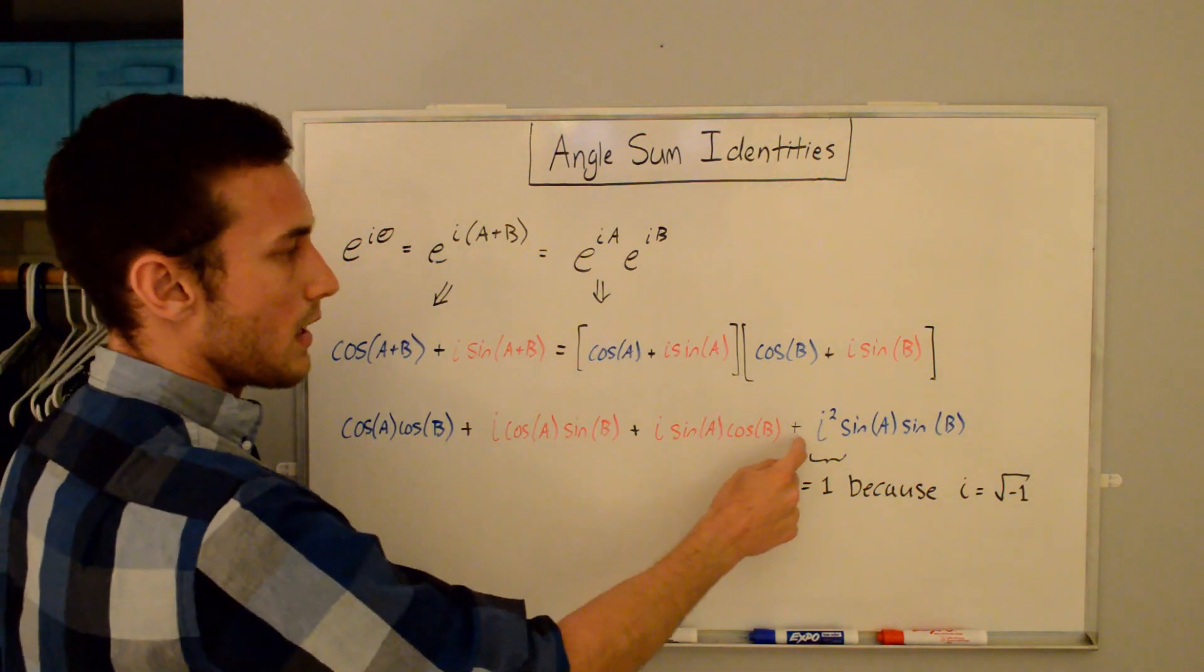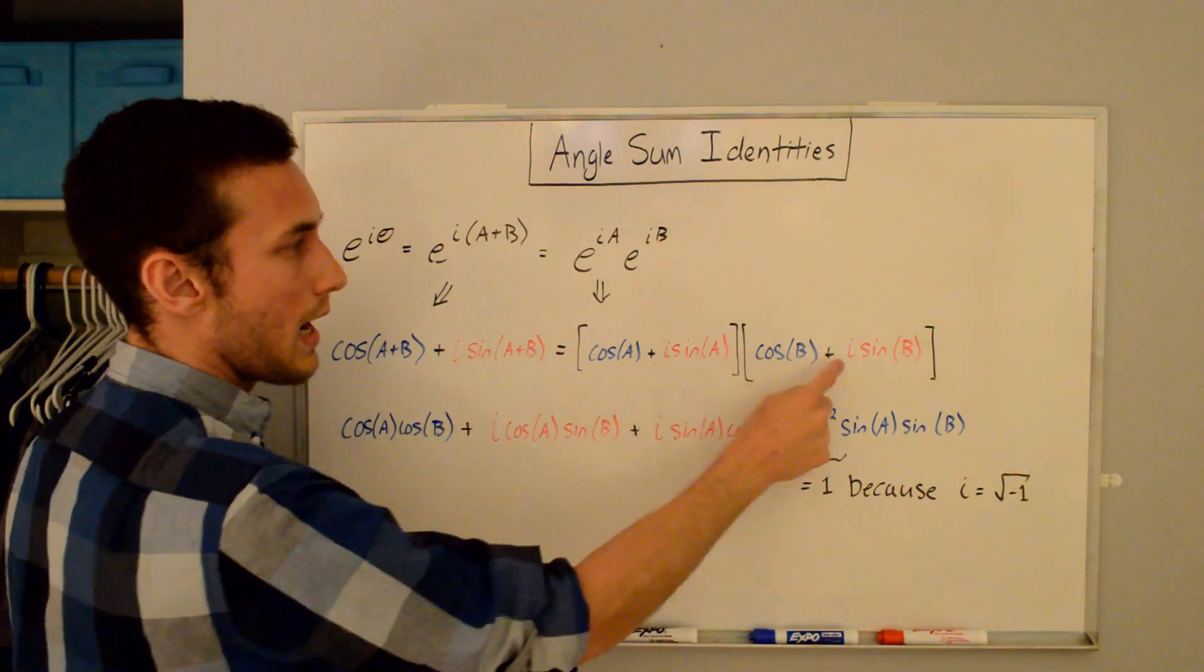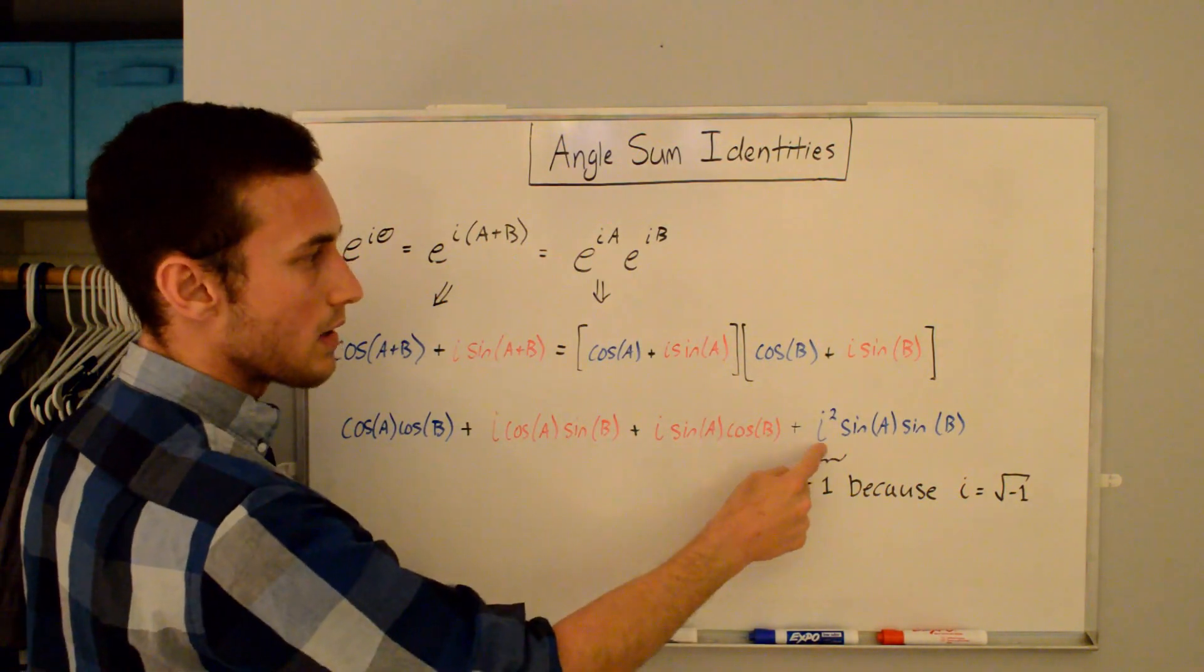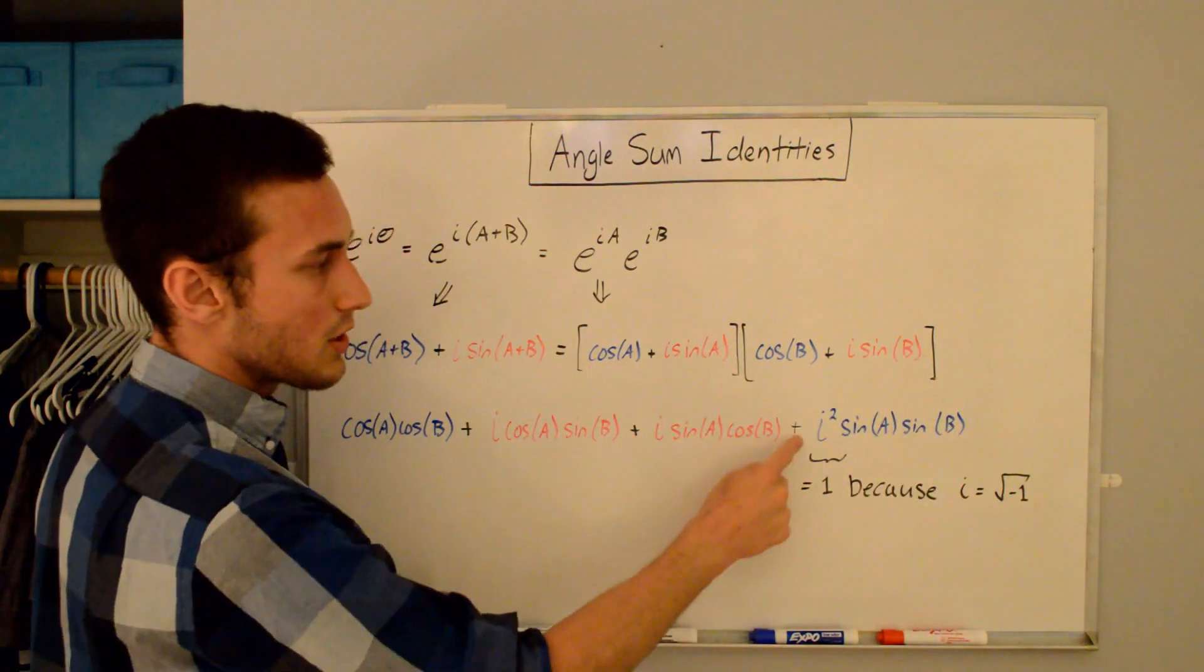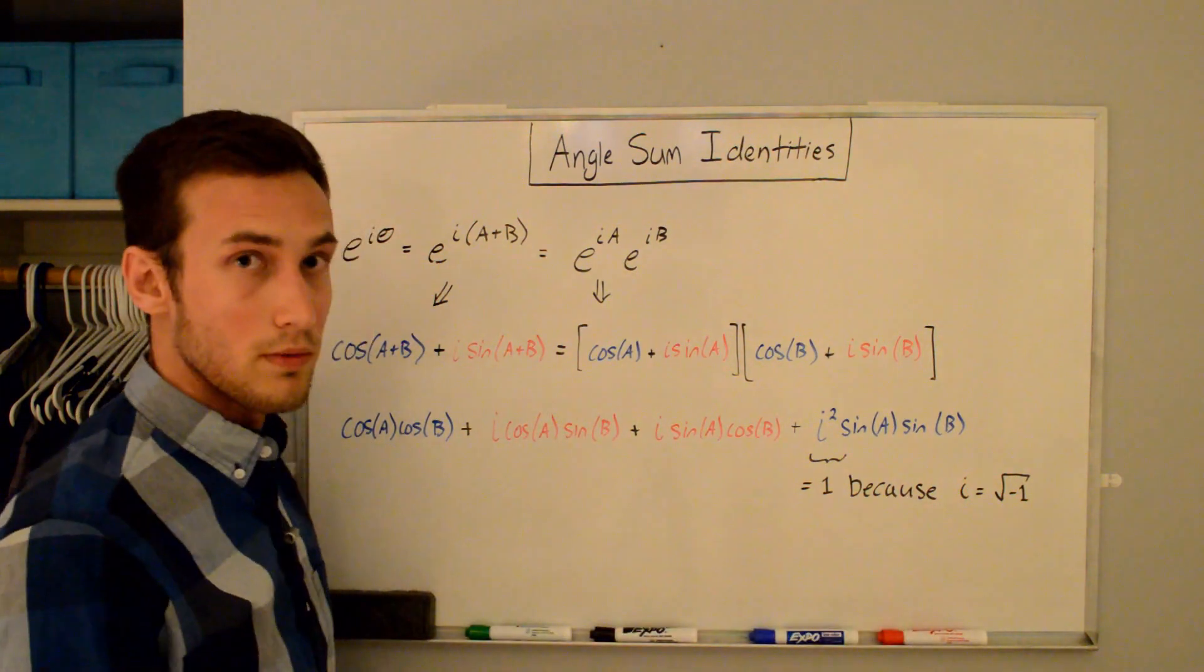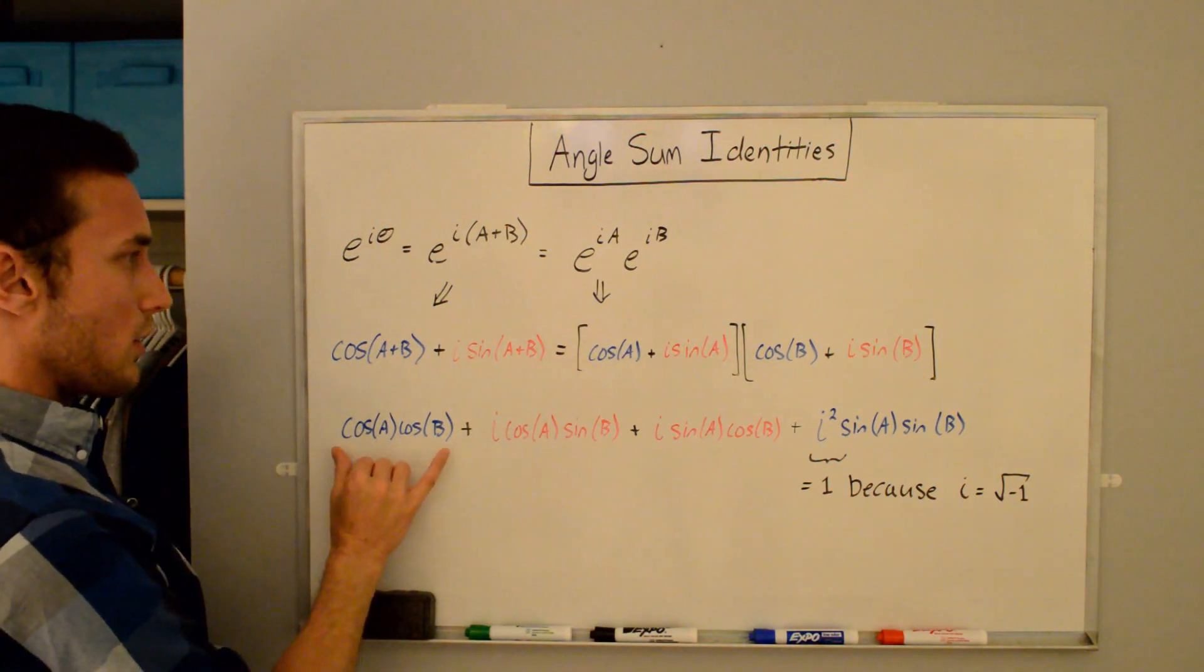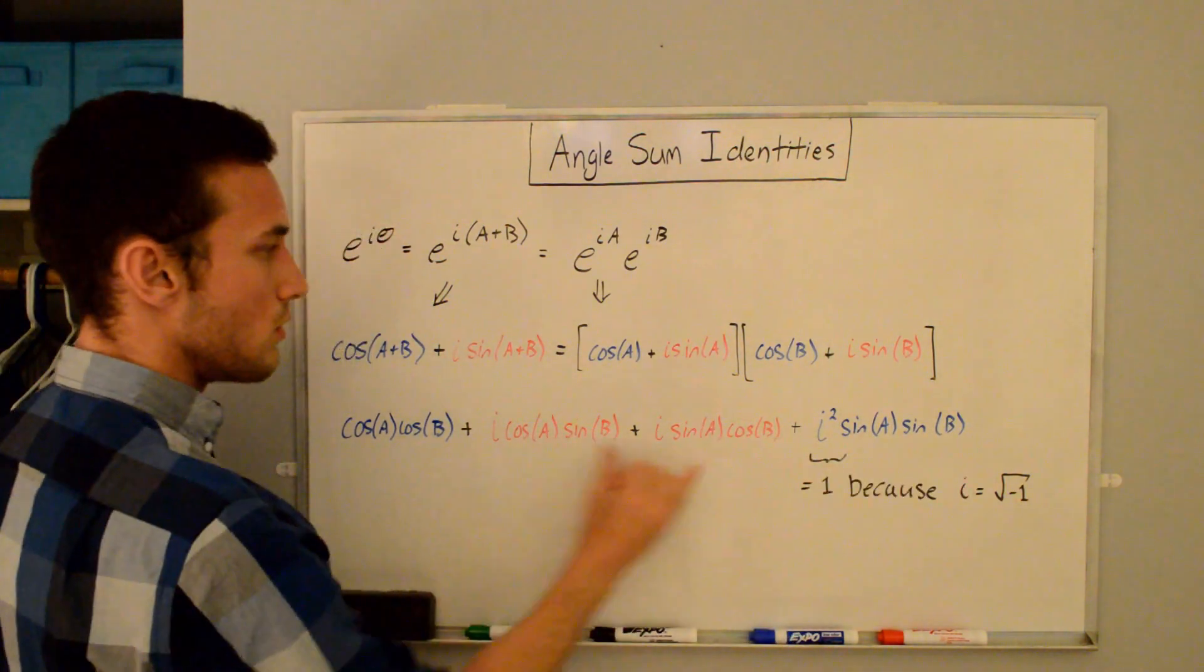And then the last term looks like it'll be imaginary perhaps, but then you find out that when you multiply i times i, you get i². And we have sin(A)·sin(B) here. And the i² is just equal to -1 because i is defined as the square root of negative 1. And so what you have here is you end up having two real parts and two imaginary parts.